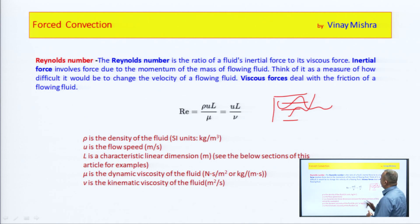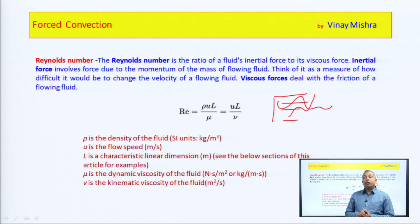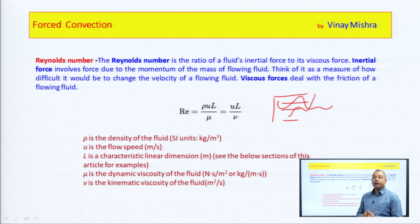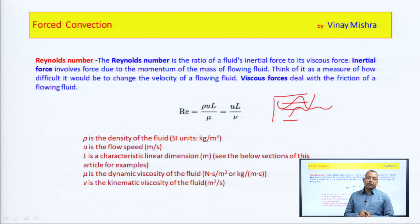If we talk about Reynolds number, Reynolds number is the ratio of inertia force to the viscous force. As we know that we have a certain amount of mass as well as velocity in the flow of fluid or liquid. That certain amount of mass and velocity gives us the momentum, so we have inertia forces acting.